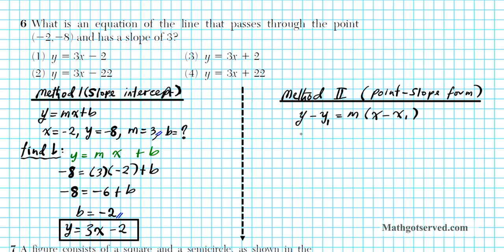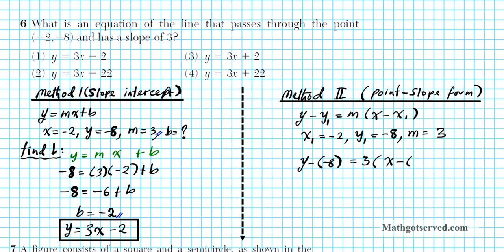In this form, x1 is the x-coordinate provided, which is negative 2; y1 is the y-coordinate provided, which is negative 8; and the slope m is 3. We do not have to find the value of any variable — we just plug in and write the resulting equation in slope-intercept form. Plugging in: y minus negative 8 equals 3 times x minus negative 2.